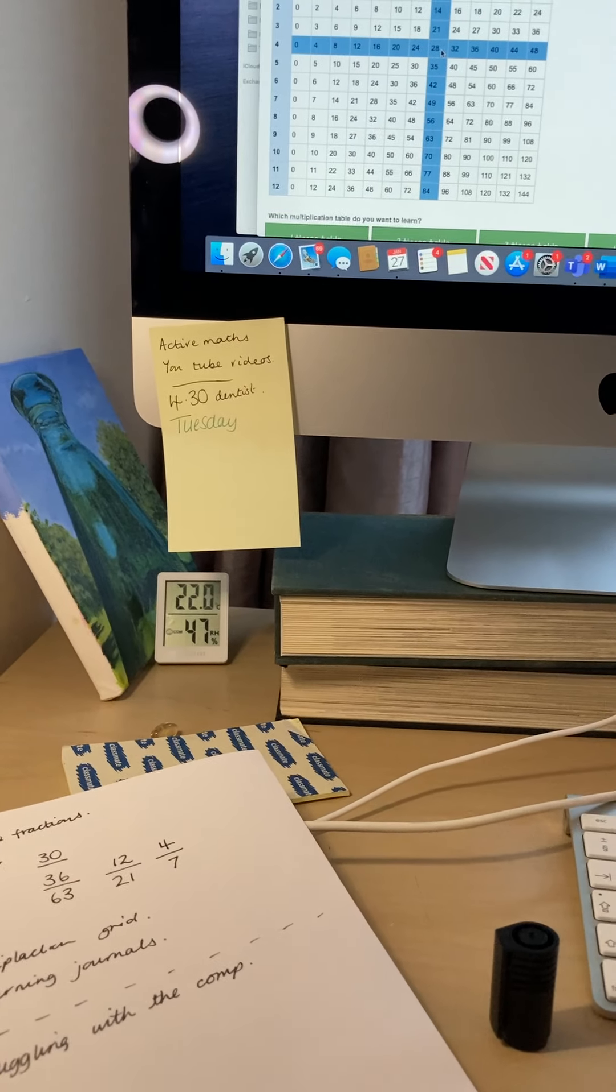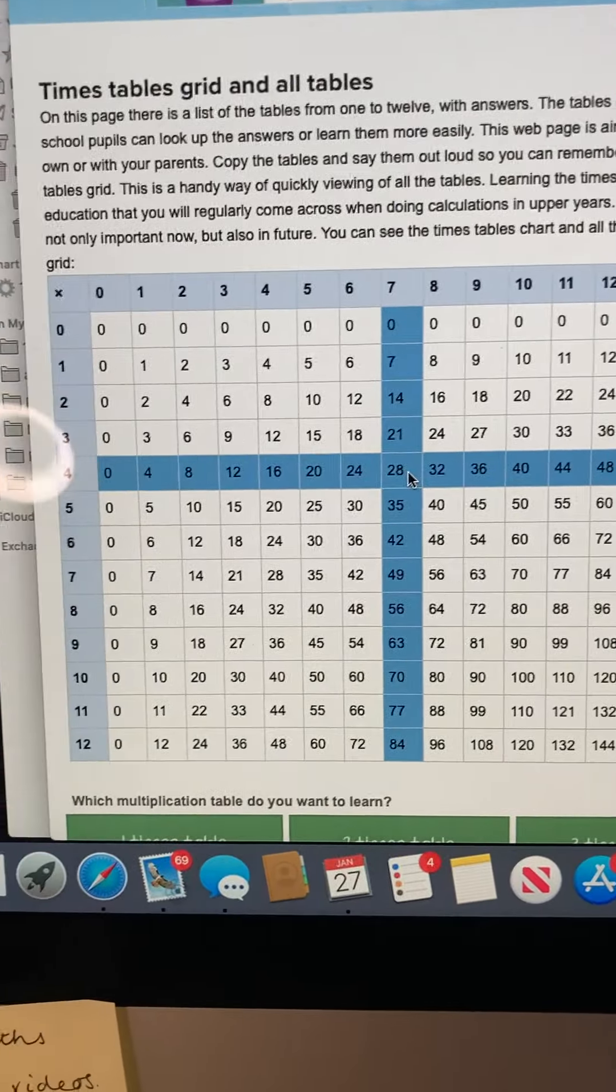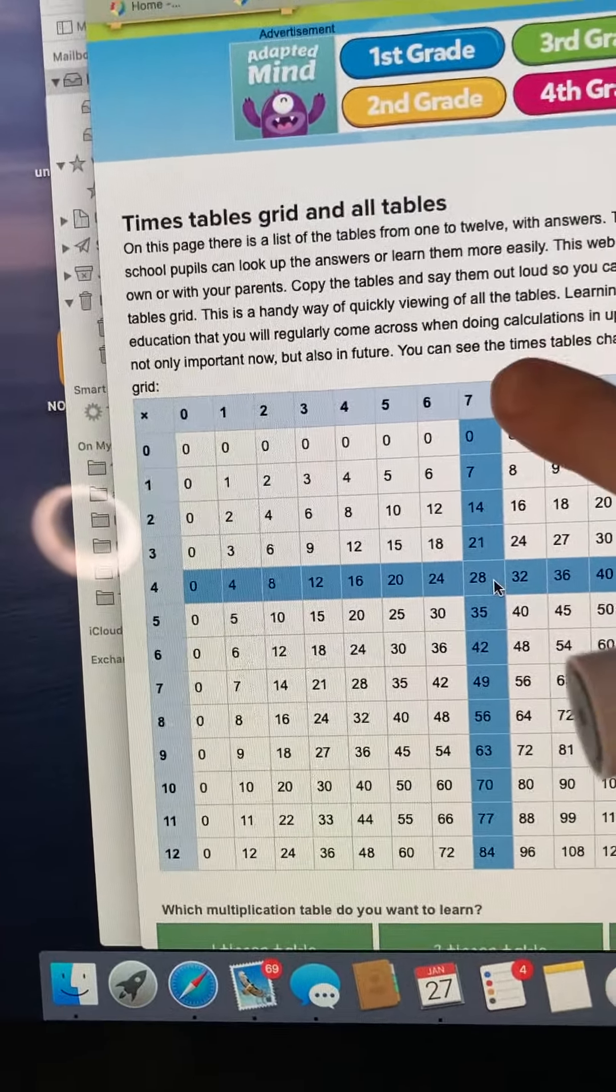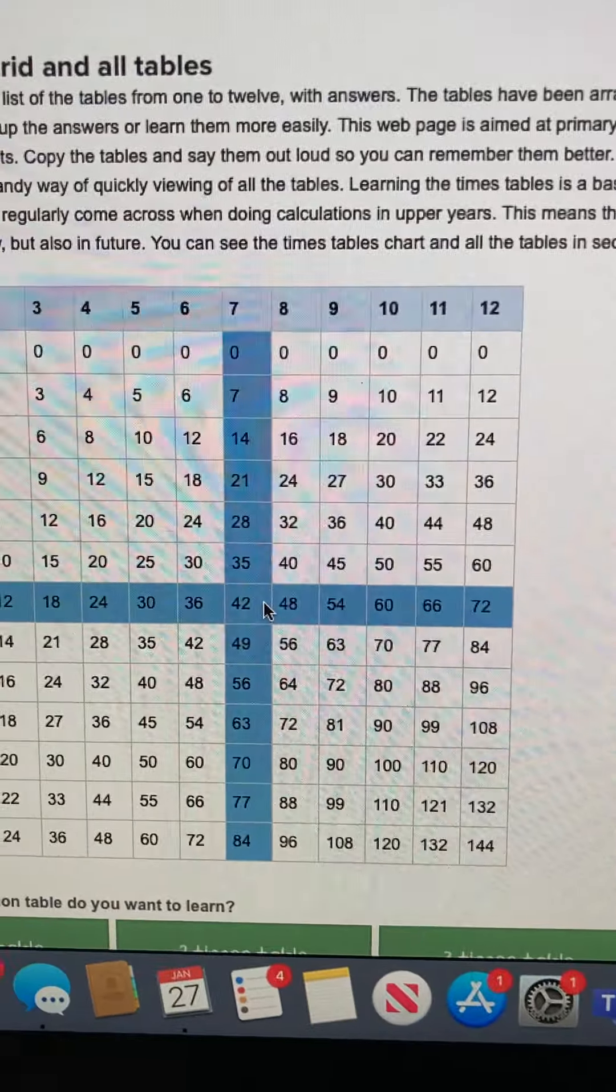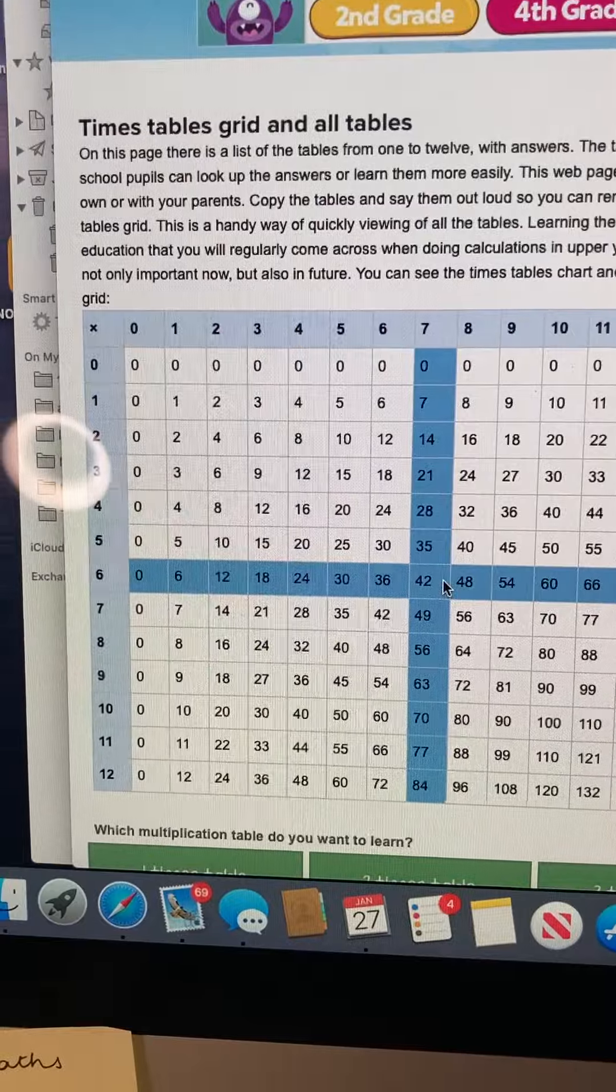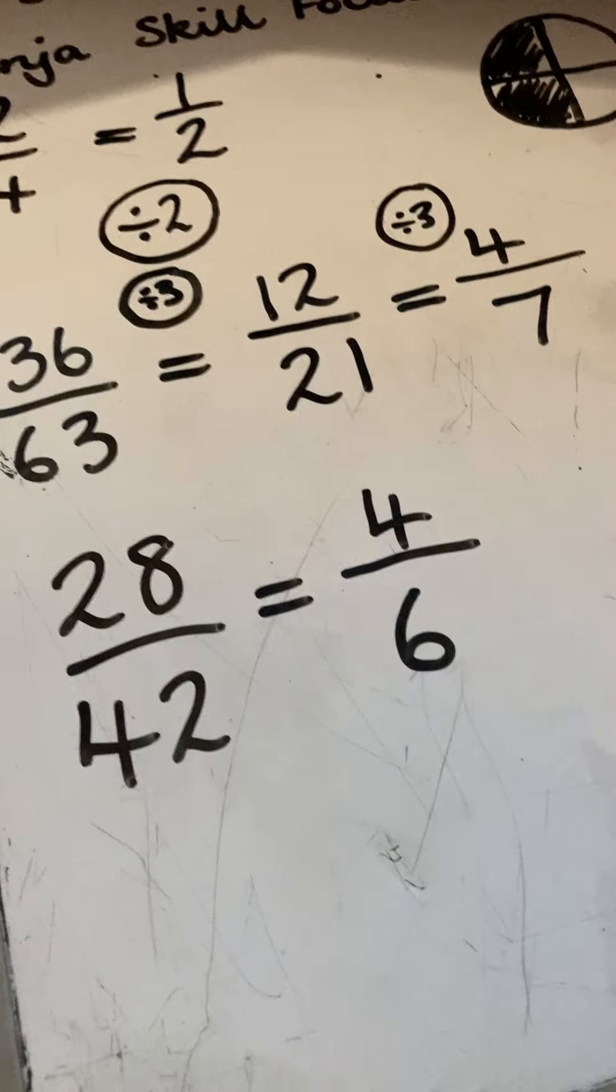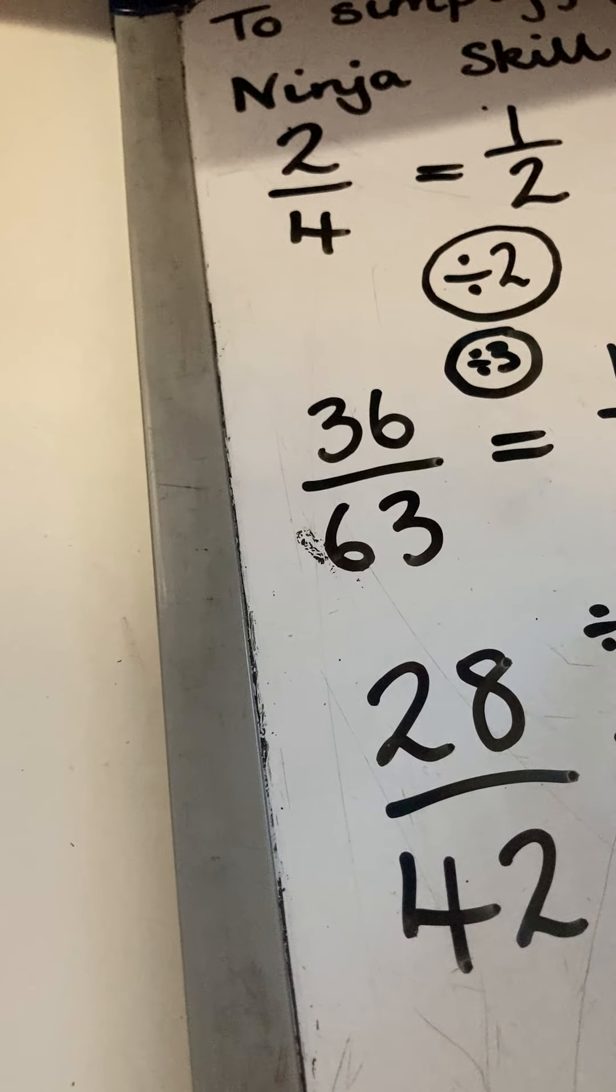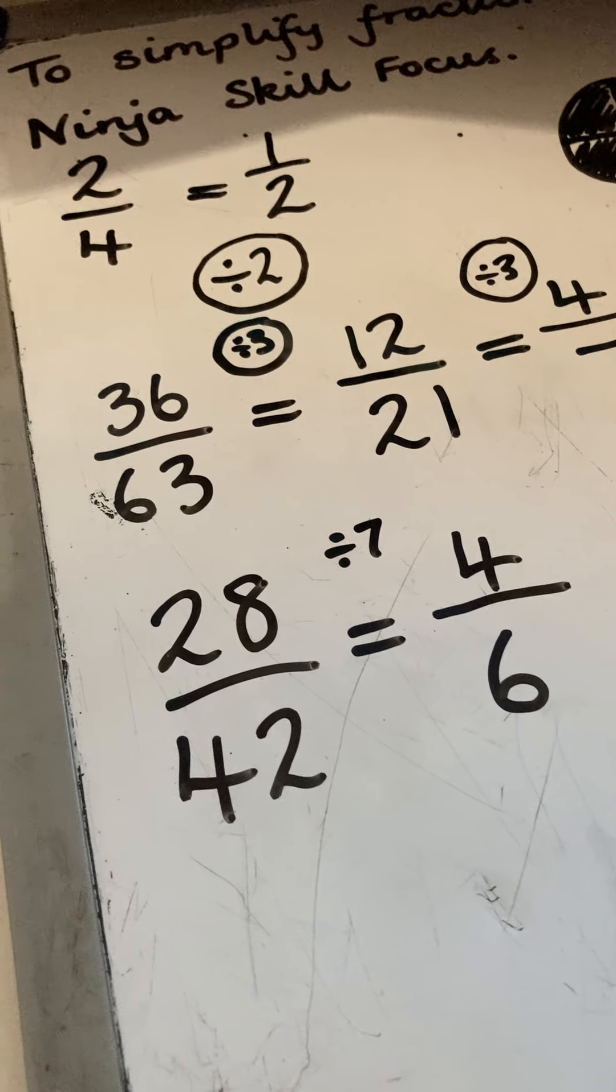So 28 divided by 7 is 4 because that is the number that's on the end there. So I've got 28 divided by 7 is 4. And then if I go down to 42, I know that 42 divided by 7 and I go all the way across, I'm going to go to 6. So it comes down to 4 sixths. I divided 28 by 7 and I've divided 42 by 7 to make 6.